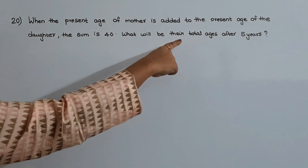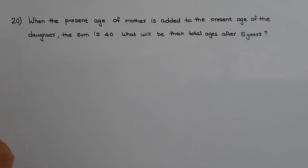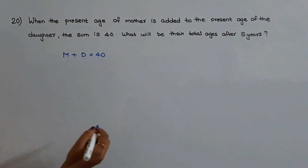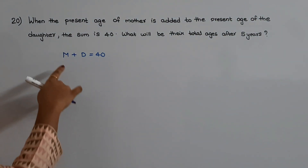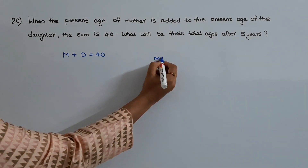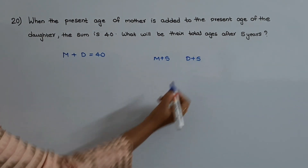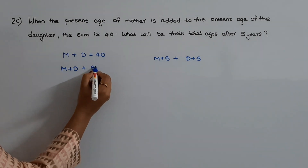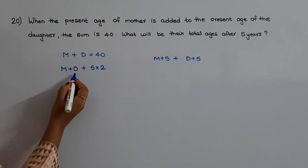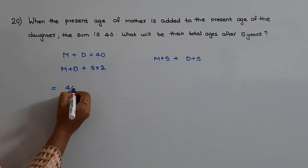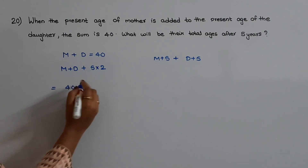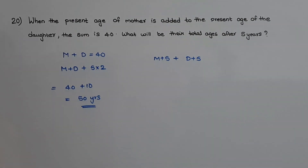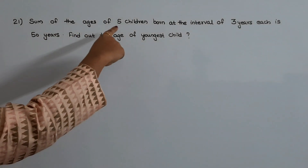The next question: when the present age of mother is added to the present age of the daughter, the sum is 40. What will be their total ages after 5 years? After 5 years, mother's age will be m plus 5 and daughter's age will be d plus 5. Their sum will be m plus d plus 10. Since m plus d is 40, the total ages after 5 years will be 40 plus 10, which equals 50 years.